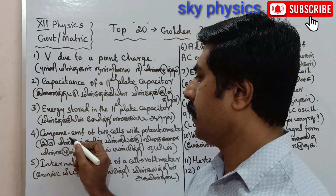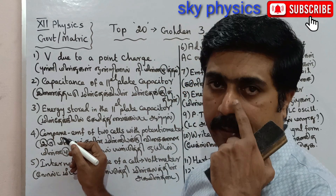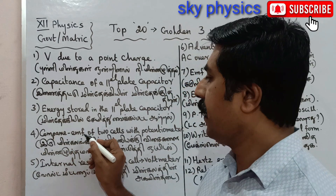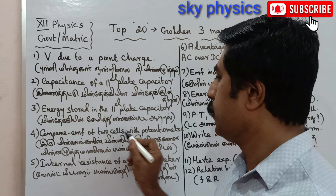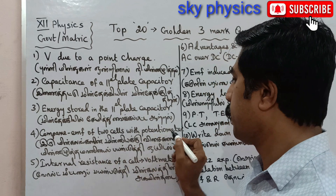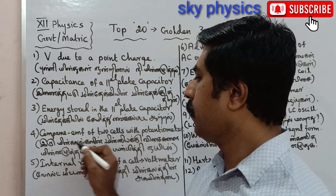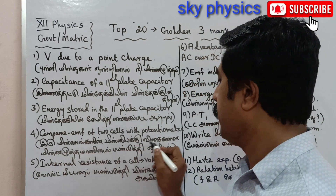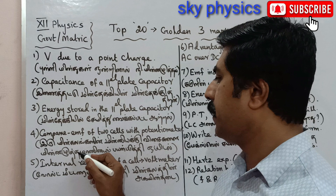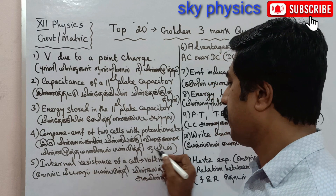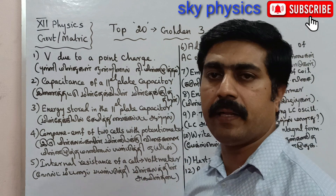4th question: Compare the EMF of 2 cells using a potentiometer. (Tamil: Rendu Minnkala Ngali — Minni Ekki Visaikilai MinnaLutthomaniyaayi Payimbitutthi Oppidal.)